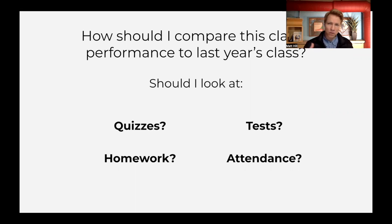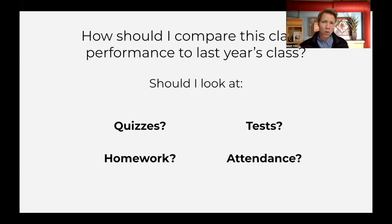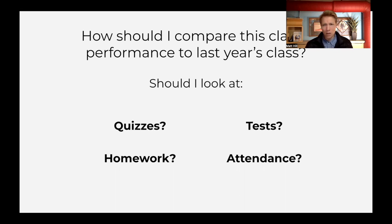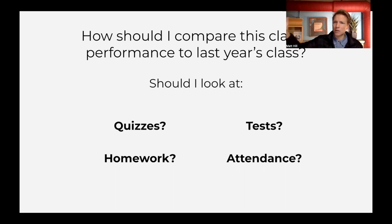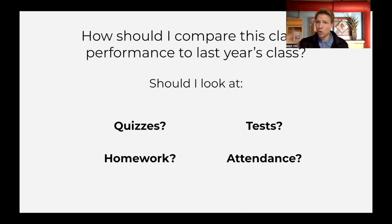Depending on the level of your students, you're going to walk through these concepts. So with the bell ringer, what we're after is the difference between a weighted average and an average. The way we approach it in the unit plan is: I'd like to compare this class's performance to last year's class's performance. What should I look at?